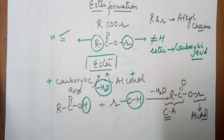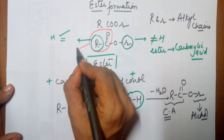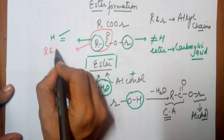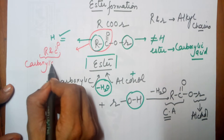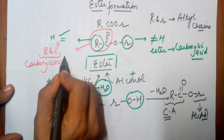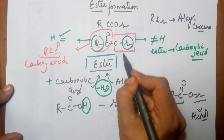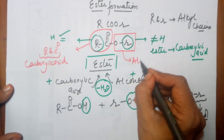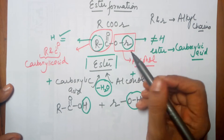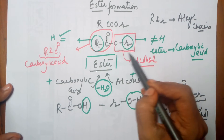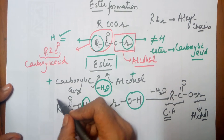In your carboxylic acid, this particular region of the compound — that is your R and the C=O part — comes from carboxylic acid, while your R attached to oxygen comes from alcohol. So by looking at the ester, you can easily know which particular alcohol is to be used or which particular carboxylic acid has to be used.